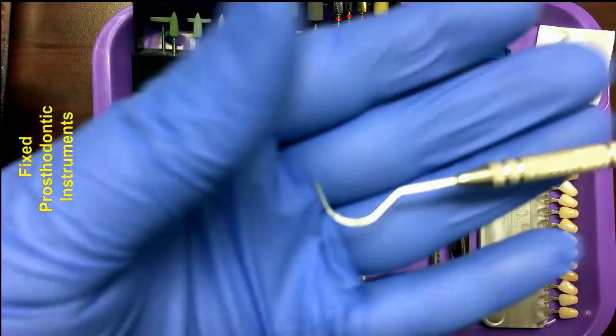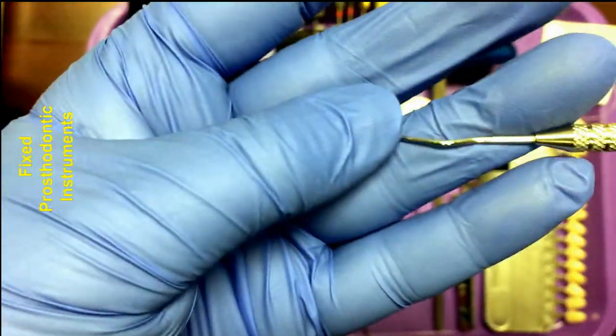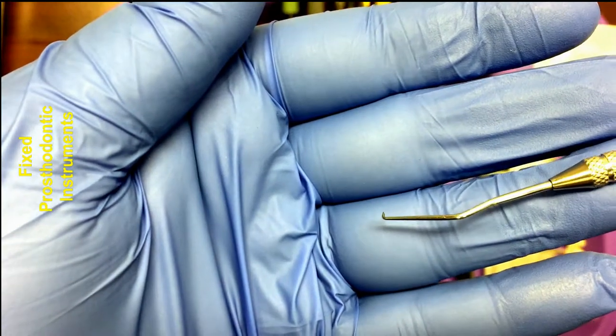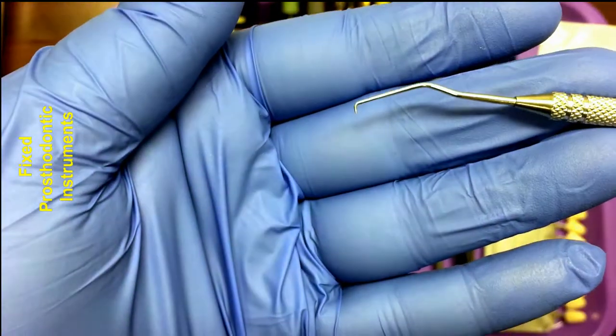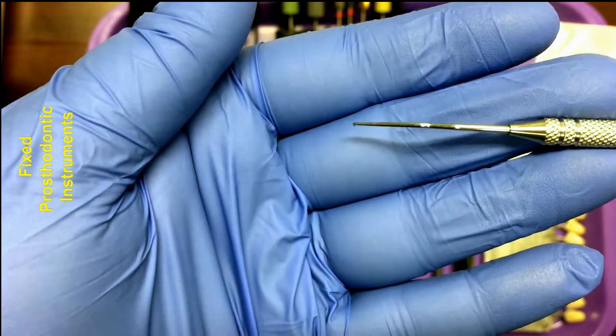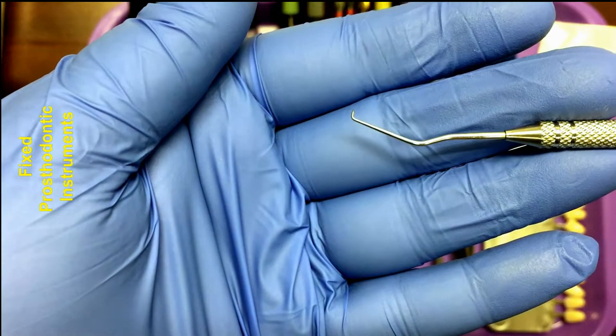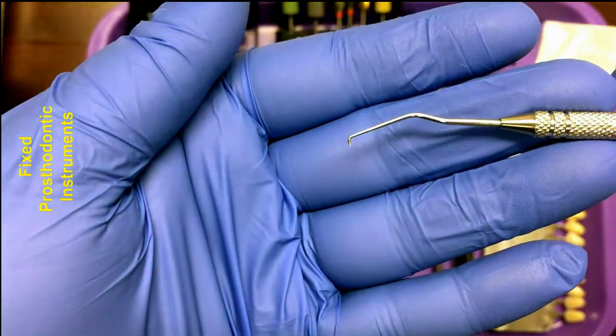The next instrument is the explorer. Explorers often have two different ends on them. The explorer is used to detect any abnormalities on the teeth, such as cavities or other imperfections. For fixed prosthodontics, the explorer could also be used to remove cement from around a seated crown.